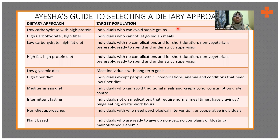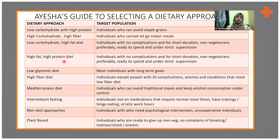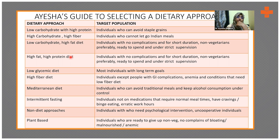High carbohydrate, high fiber diet is especially suitable for older individuals. A low carbohydrate, high fat diet is for individuals with no complications, for a very short duration, and preferably non-vegetarian, because a high fat diet is more easily achieved with non-vegetarian foods. This has to be done under very strict supervision — I always recommend people go to a nutritionist who can plan a well-versed ketogenic diet, as not all nutritionists can do this.